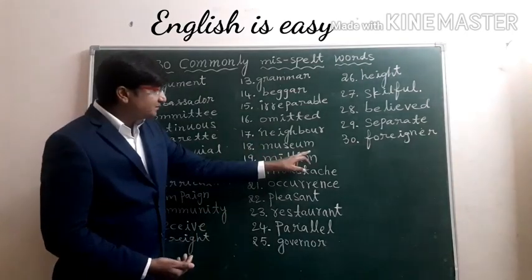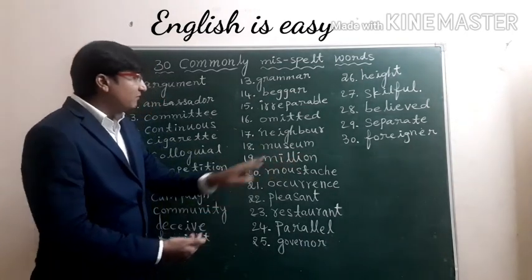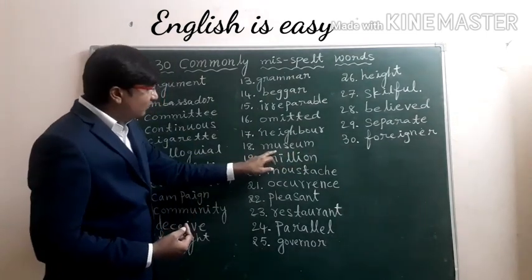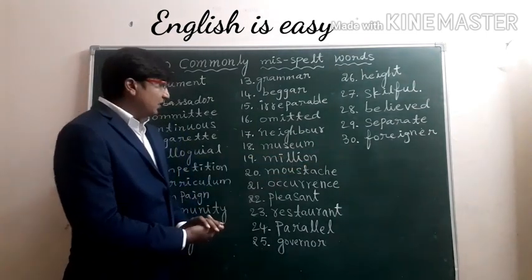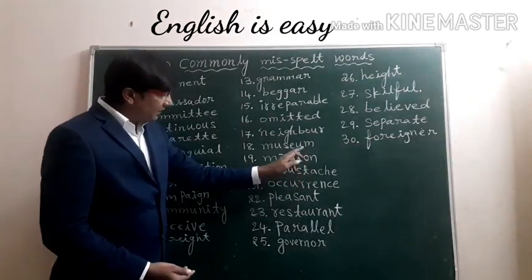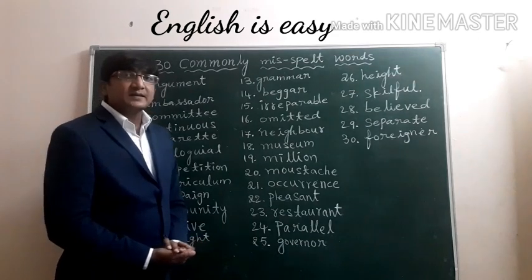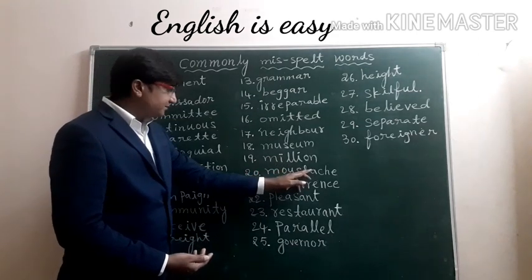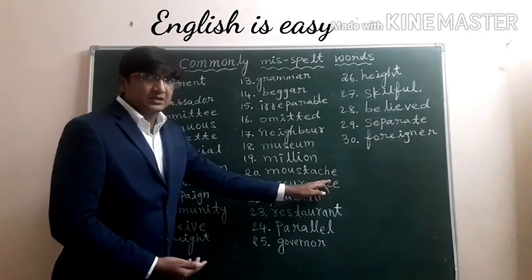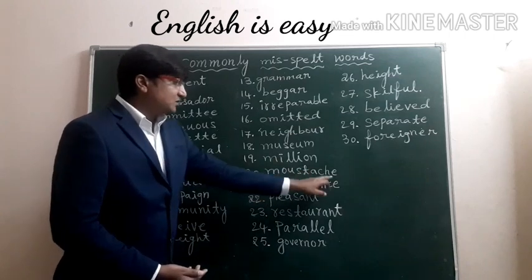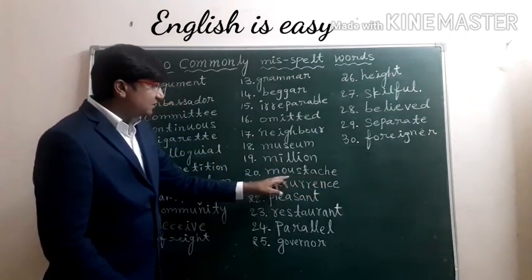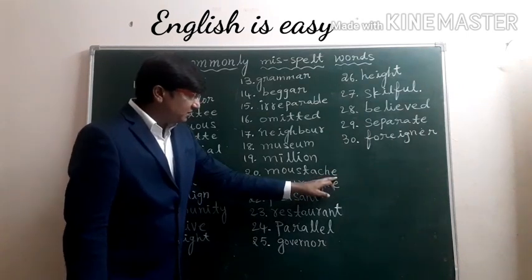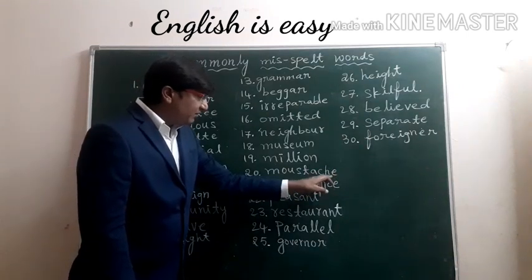Eighteenth one: Museum. We will miss the letter E. But the correct spelling is M-U-S-E-U-M. Nineteenth one: Million. In this word, we write single L. But remember, we have to write double L. Twentieth one: Mustache. The correct pronunciation is 'mustache.' When we write this word, we write only M-O-U-S-T-A-C-H without E. But remember, E is also supposed to be written — M-O-U-S-T-A-C-H-E.